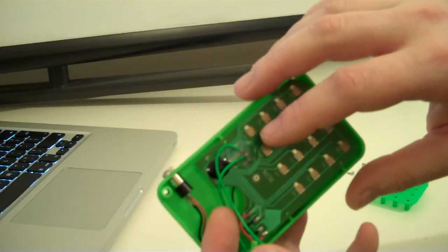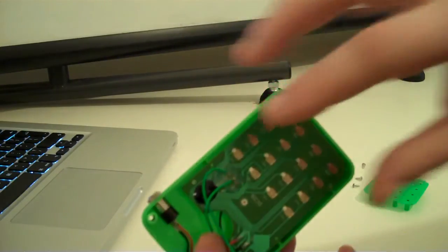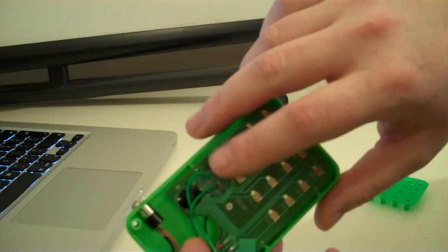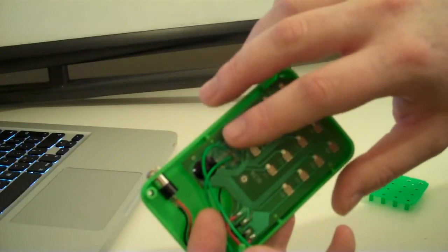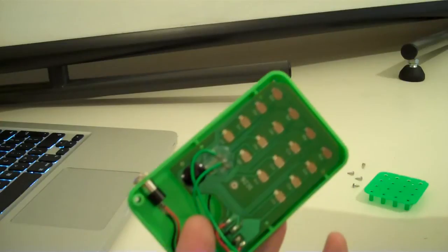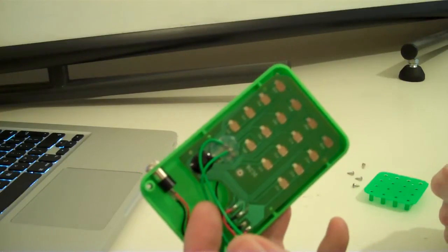And the way that I found this bend point was to just lick my finger and kind of press around the circuit until I found something that changed the sound in a pleasing way.